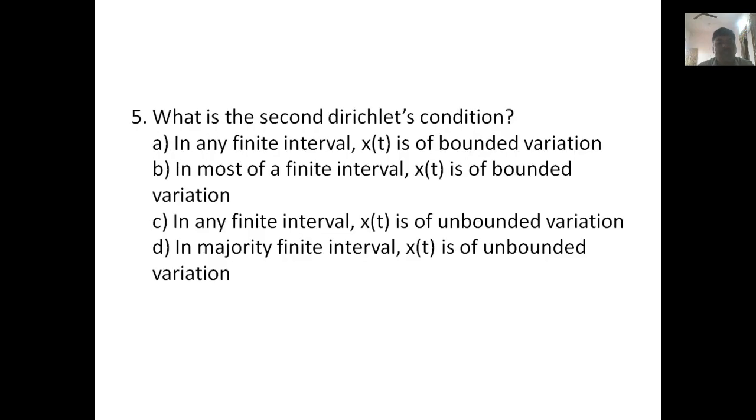Fifth one: What is the second Dirichlet's condition? Answer is a, in any finite interval, x(t) is of bounded variation.